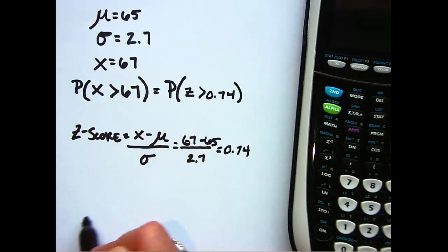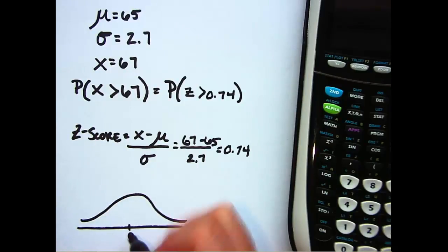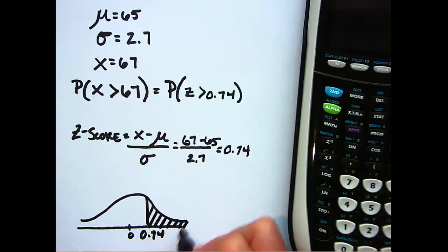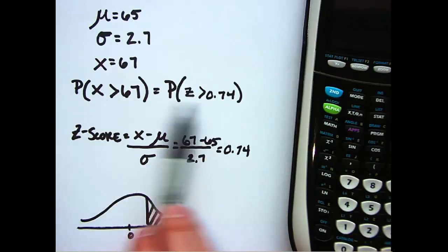mean. So when I do this on the curve, 0 is the center because the standardized value of μ is 0, because it's 0 distance from itself. And I'm interested in the area above 0.74—that's the direction that we're